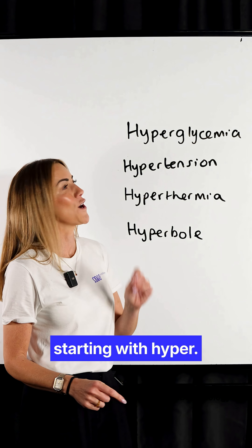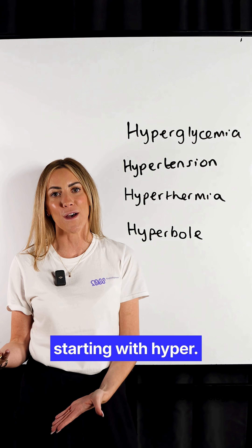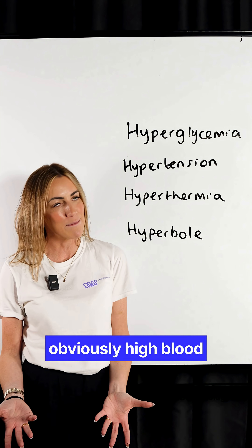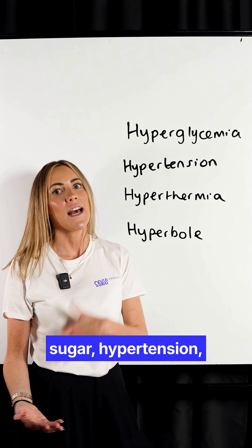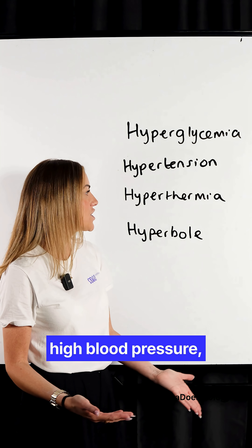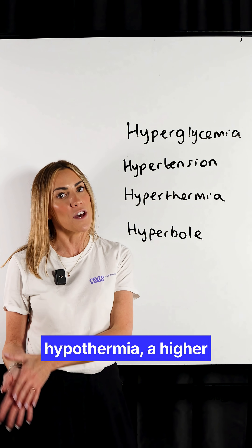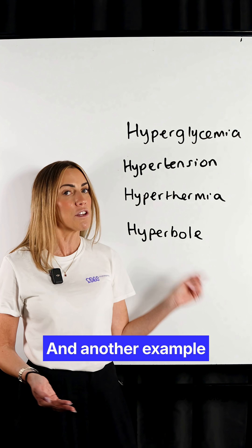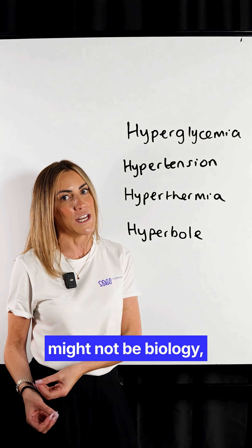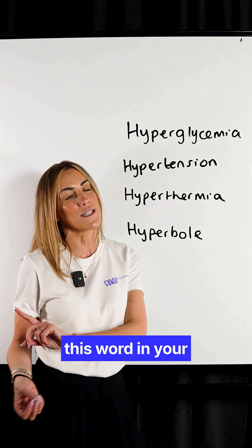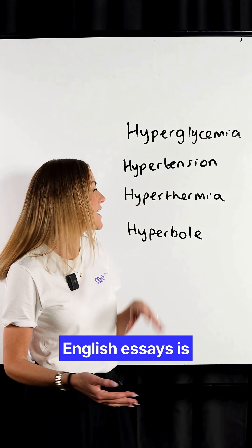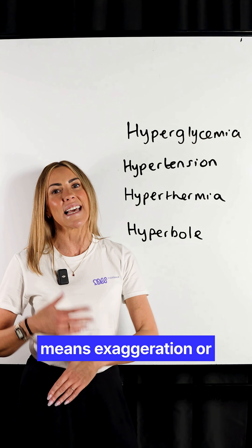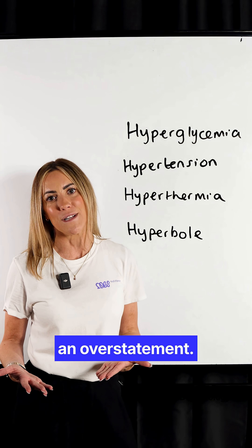And here are some examples starting with hyper. Hyperglycemia is obviously high blood sugar. Hypertension — high blood pressure. Hypothermia — a higher body temperature. And another example, which might not be biology but you might use in your English essays, is hyperbole, which means exaggeration or an overstatement.